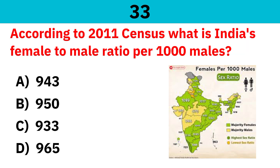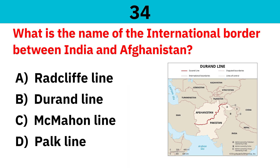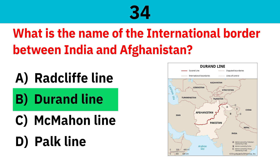According to the 2011 census, what is India's female-to-male ratio per 1,000 males? Correct answer is 943. What is the name of the international border between India and Afghanistan? Correct answer is the Durand Line.